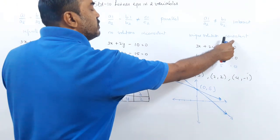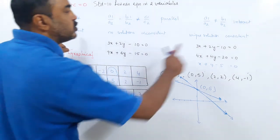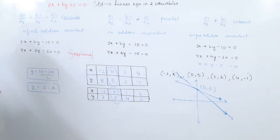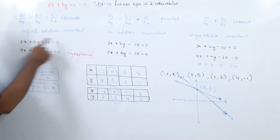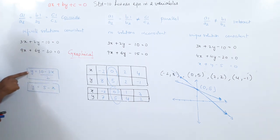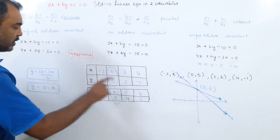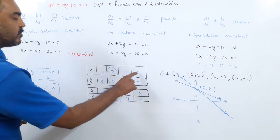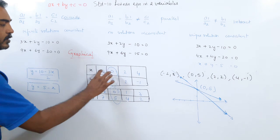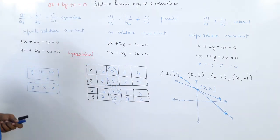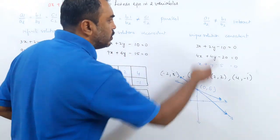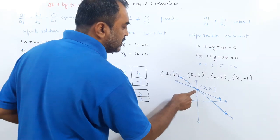Consistent means having a solution — either a unique solution or infinite solutions. Having no solution is inconsistent. So with the graphical method: make y the subject of the formula, take some values of x, find corresponding y values, plot on graph paper, and draw the line. Do the same for the second equation. Then either the lines coincide (infinite solutions, consistent), are parallel (no solution, inconsistent), or intersect at one point (unique solution, consistent).